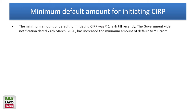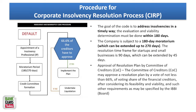For CIRP, the minimum default amount was previously 1 lakh rupees, but it has been increased to 1 crore rupees following an amendment. So 1 crore rupees is now the minimum default amount for CIRP. This amendment also introduced the pre-packaged insolvency resolution process.